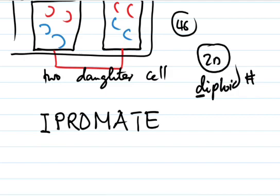To remember the stages, use IPROMAT: I for interphase, P for prophase, M for metaphase, A for anaphase, and T for telophase.